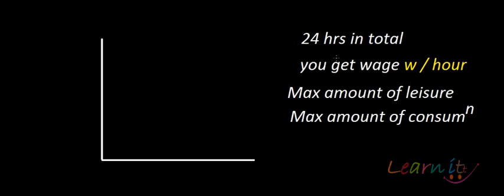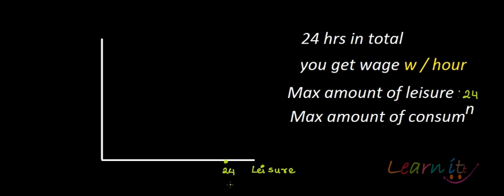Remember, you model the economic good, not the economic bad. You have 24 hours in total and you get a wage rate W per hour. The maximum amount of leisure you can have is 24 hours. If I plot 24 here on the leisure axis, that means you can have at most 24 hours of leisure, which simultaneously means you have zero amount of labor.